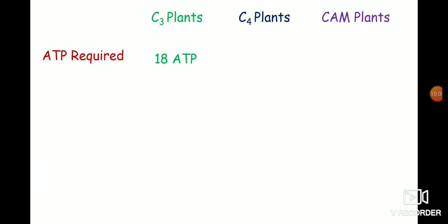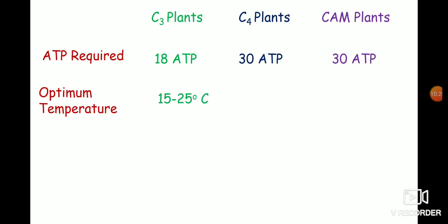The ATP required for the C3 cycle is 18 ATPs, whereas C4 and CAM plants require 30 ATPs. Twelve additional ATPs are needed for the conversion of pyruvic acid to phosphoenol pyruvic acid. The optimum temperature required for C3 plants is 15 to 25 degrees centigrade, whereas C4 and CAM plants can fix carbon at higher temperatures as well.